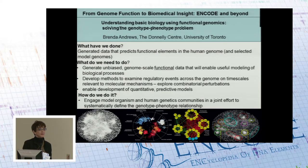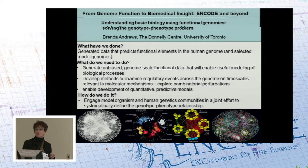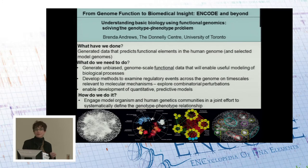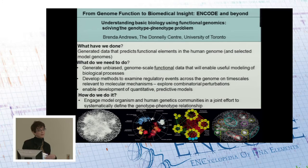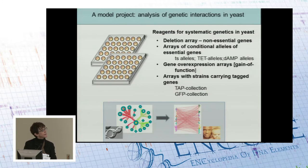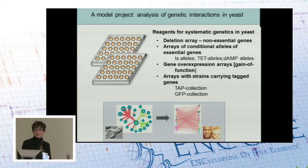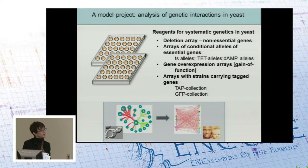We continue to support efforts to engage both model organism and human geneticists in joint efforts to systematically functionally annotate the genome. The idea of cross-fertilization between the model organism and human genetics communities — that link is there, but it's not strong enough, and we need to continue to reinforce it. There is a serious problem with genetic redundancy in functionally exploring the genome by genetic perturbations.